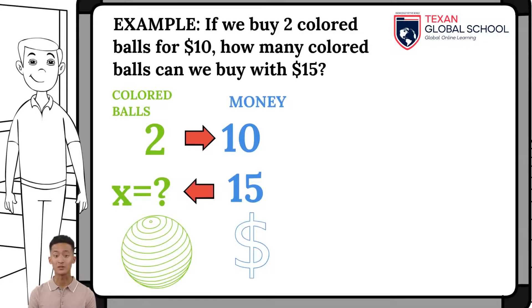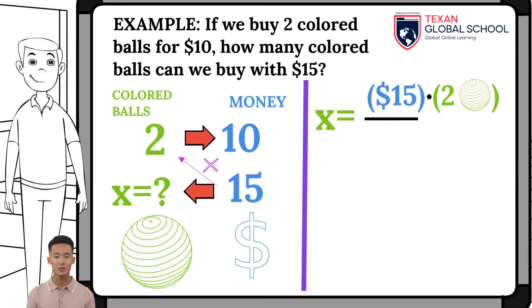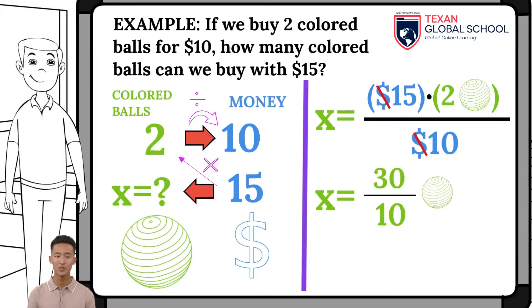We can see that the left column is colored balls, and the right column is money. Once the Rule of Three has been formulated, we can solve it. Hence, place the unknown, X equal to the product of fifteen dollars with the two colored balls, divided by the ten dollars. As a result, the dollars cancel, getting the desired units, the colored balls. When performing the multiplication of fifteen times two equals thirty, divided by ten results three. Therefore, if we buy two colored balls for ten dollars, with fifteen dollars, we can buy three colored balls.